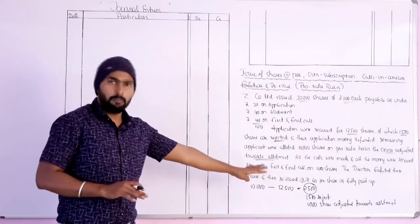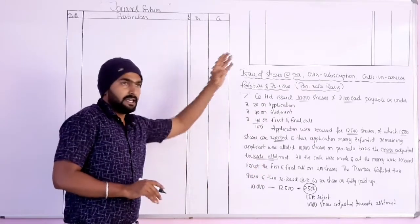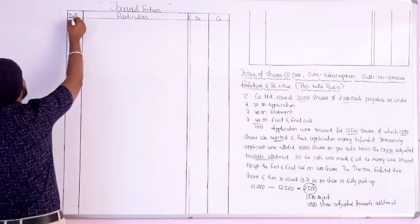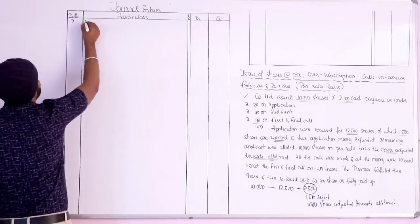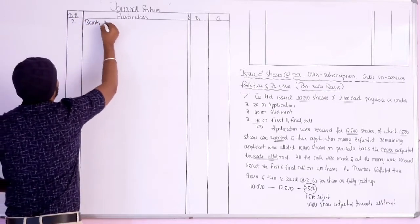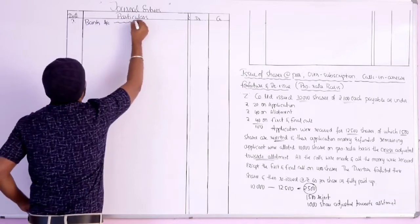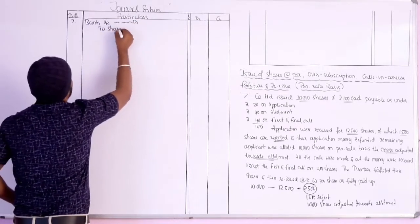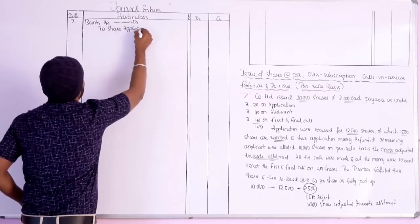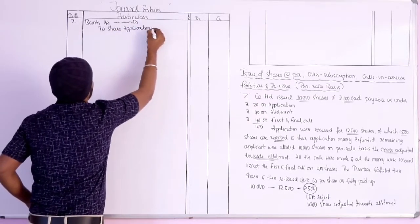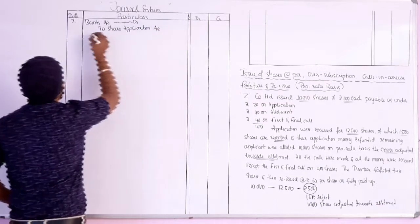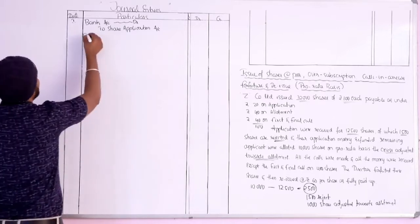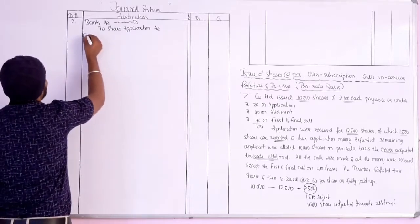This is the pro-rata basis case. For the first journal entry — application money received — Bank Account debit to Share Application Account. Total 12,500 shares applied.